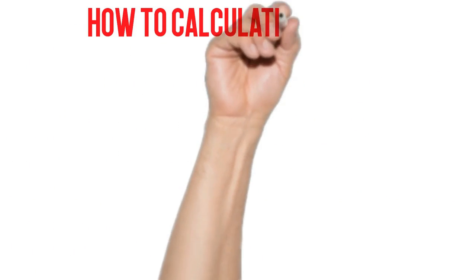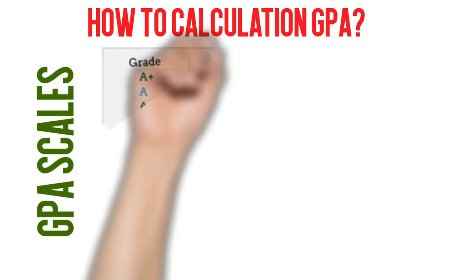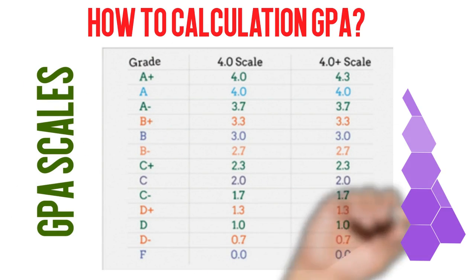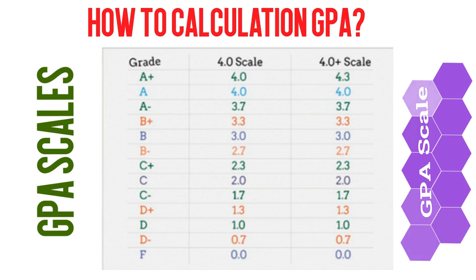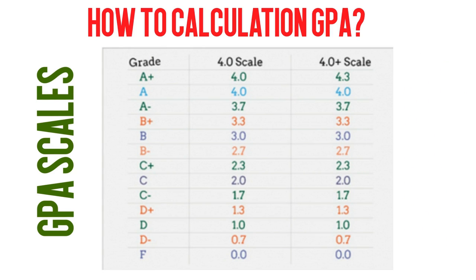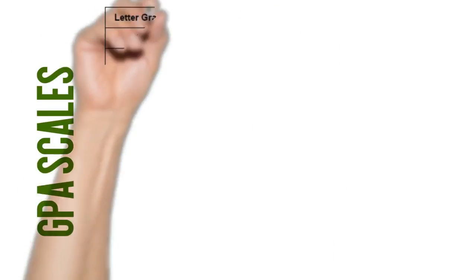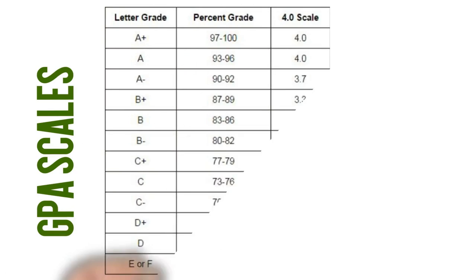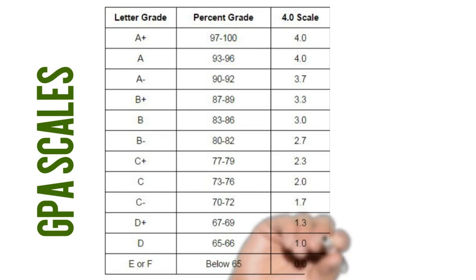Let me explain how to calculate GPA with the help of an example — you will very easily understand it. One important thing: you must know about the GPA scale. The standard GPA is based on a 4.0 scale, though it will vary from university to university. You can find this grade scale in your syllabus, university websites, and the administration office.